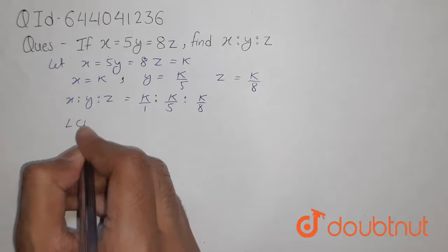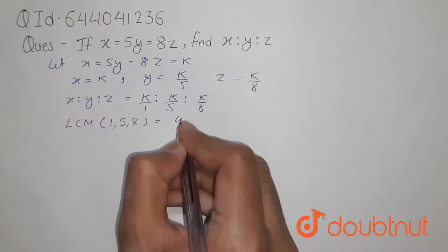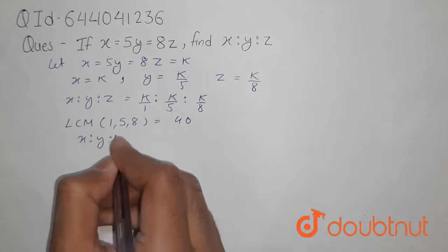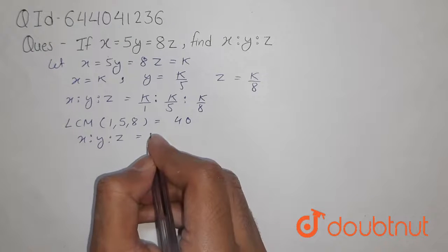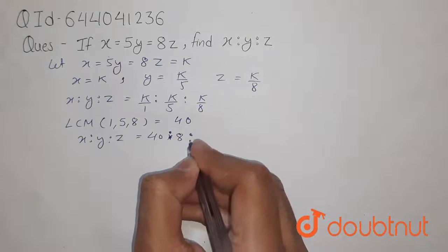So, the LCM of 1, 5, 8 will be 40. So, x ratio y ratio z can be written as 40 ratio 8 ratio 5.